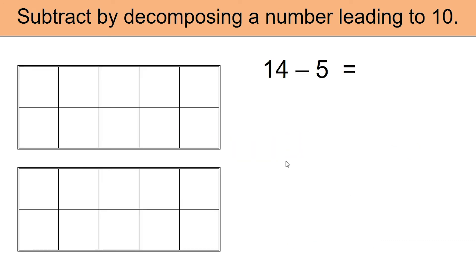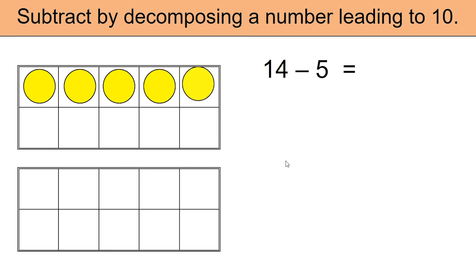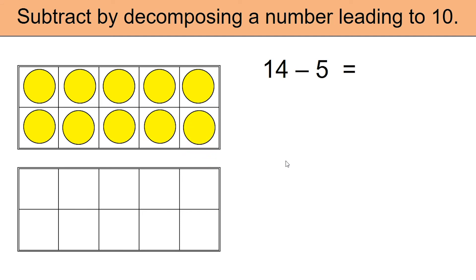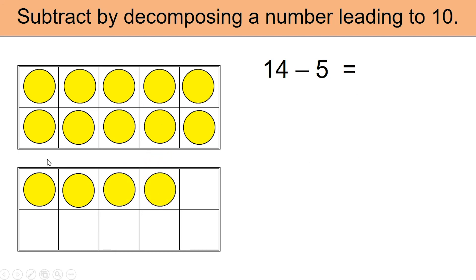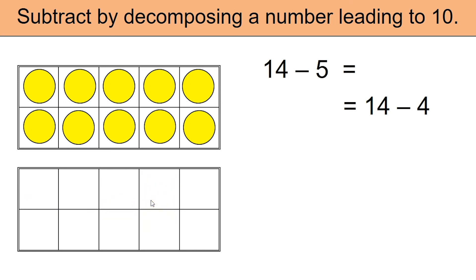Example number 3: we need to remove 5 from 14. As usual, use the tens frame to set up 14 — 11, 12, 13, 14. The second frame has 4. I needed to remove 5; since I already have these 4, let's go ahead and remove them. 14 minus 4 — let's take them off. Once we remove the 4 we are now left with 10.